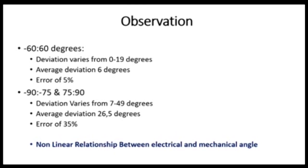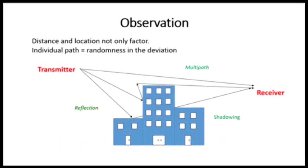It is also noted that there is an element of randomness to the deviations due to the individual path a signal travels due to reflections and multipath.